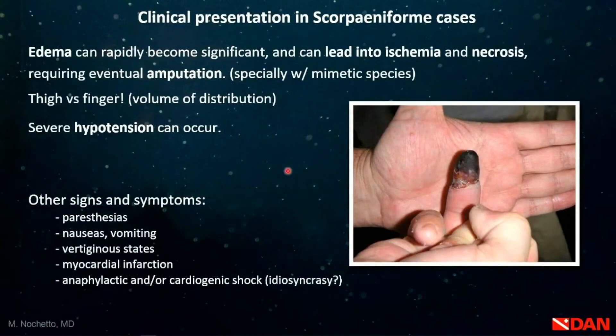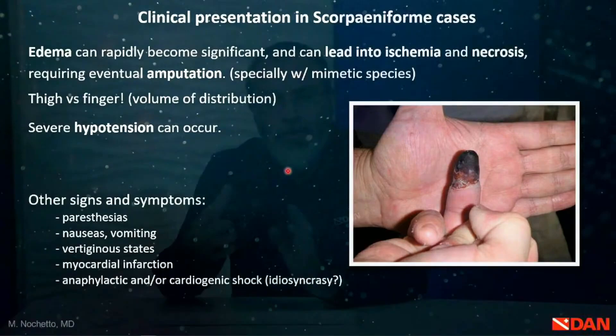The edema can become rapidly significant and lead to ischemia — impaired perfusion — if it occurs at a terminal site like your fingers. The same puncture wound on a fingertip may not have the same effect as one on your thigh, because on the fingertip there is not much tissue to distribute the toxin, while on the thigh it can disperse much faster. This concept is called the volume of distribution, and it is particularly important to keep in mind with your fingers.